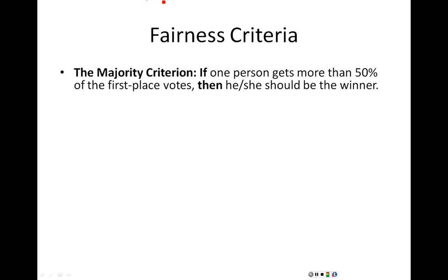If there is no candidate that has more than 50% of the first place votes, we don't really care — that's fine. But if there actually is one, then that person should be the winner. If somebody else wins using the election process you're trying to use, that doesn't seem very fair. So majority criterion: if there's somebody with more than 50% of the first place votes, that person should win.